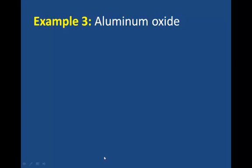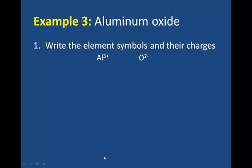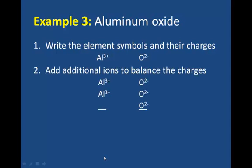In example 3, aluminum oxide, the first step is to write the element symbols and their charges. We can see that the charges don't balance, so we need to add additional ions to balance the charges.